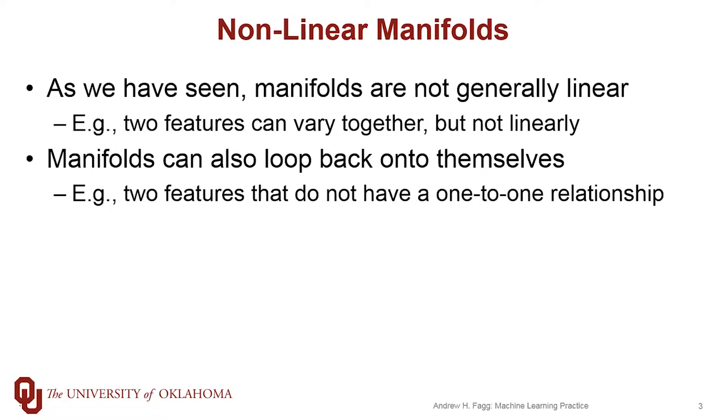We've already played some with principal component analysis that tries to take advantage of linear relationships between features. But in general, features that vary together do not tend to vary in a linear manner. They might have some region where they vary linearly together, and you've seen lots of examples of this in your homework assignments.